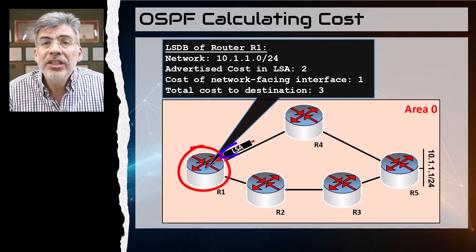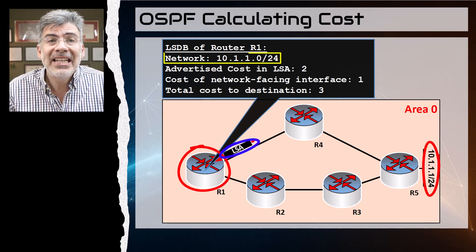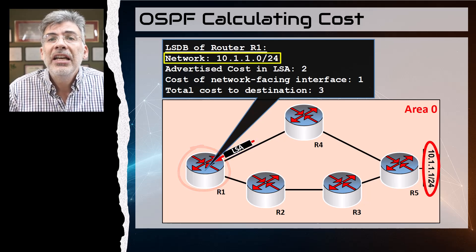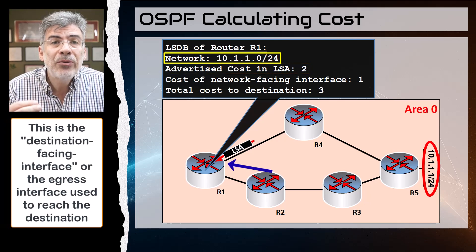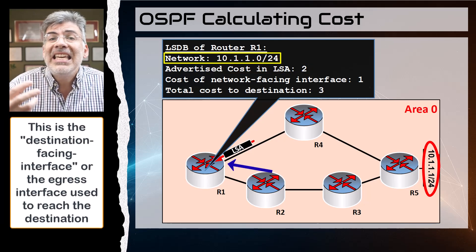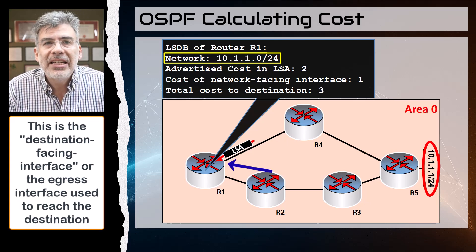Now when R1 receives that LSA, it looks at its contents, and for that destination, the advertised cost that is sent from R4 is two. It then looks at the cost of its network-facing interface, that is the egress interface to reach that destination, which is a cost of one.